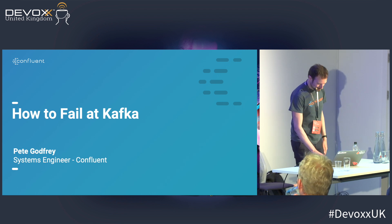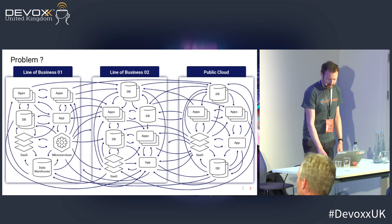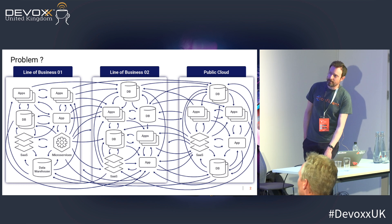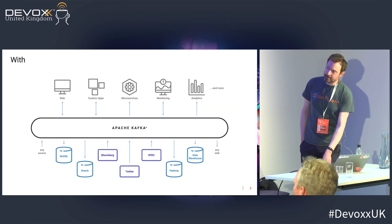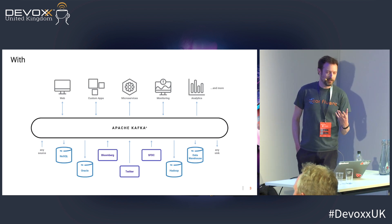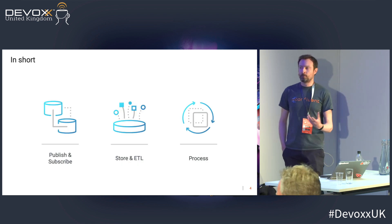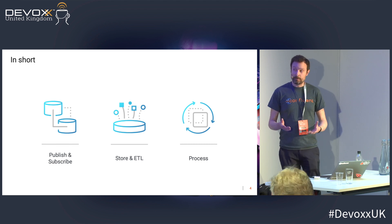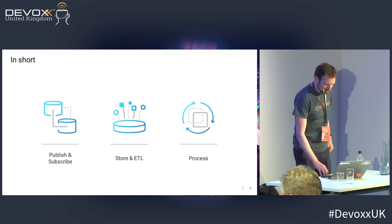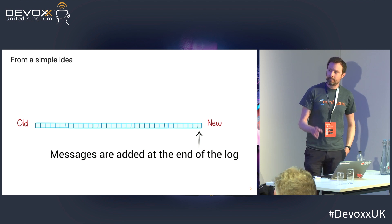For those of you that don't know what Kafka is or have never used it, basically it's designed to solve this spaghetti architecture that enterprises often end up with — lots of disparate point-to-point connections. Kafka's designed to slice through that, decouple everything, mean everything can communicate nicely between each other. But it's more than just messaging. It's got storage, ETL, real-time processing, stream processing, and a whole library of connectors. There's a whole ecosystem of things you can connect to Kafka. At its heart, it's very simple — it's just a log.